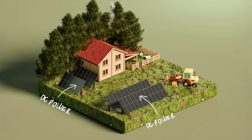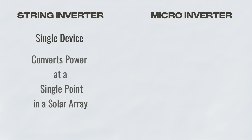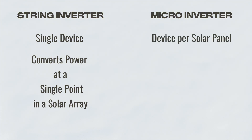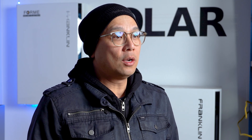Your solar panels produce DC power, but your home actually runs on AC power, and your inverter is what makes that conversion happen. Here's the key difference: a string inverter is a single device that does that power conversion for your entire system at a single point. A microinverter is a small device that attaches to each solar panel and does the conversion right at the panel level instead. These small changes can actually make a big difference in terms of performance, reliability, and cost. All right, let's break it down.